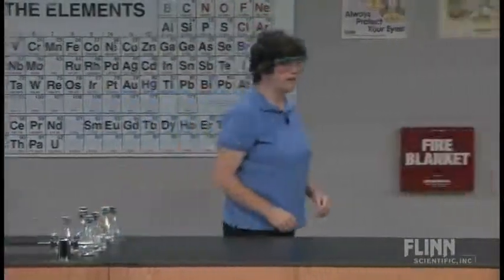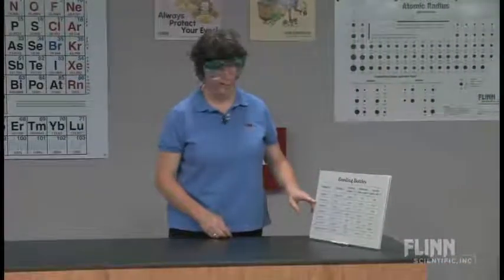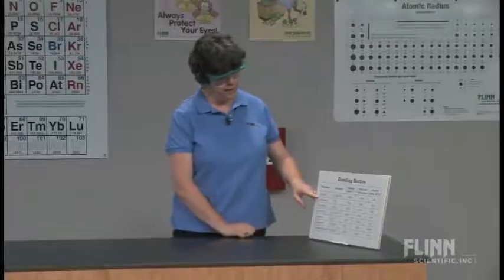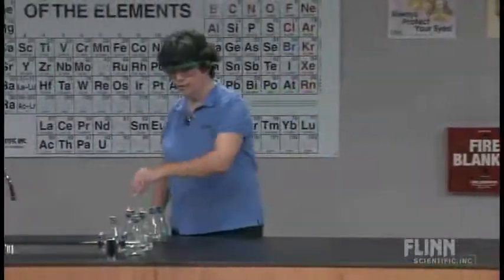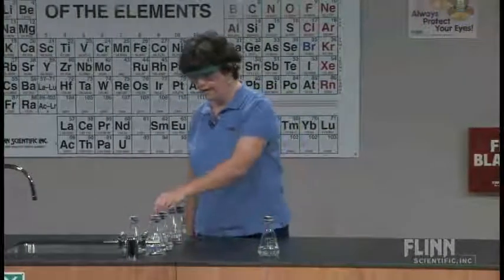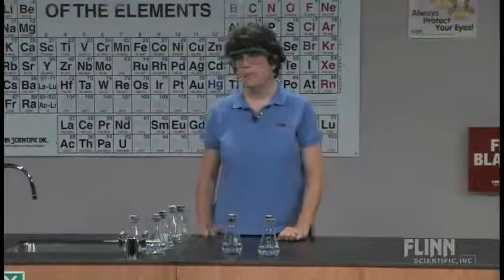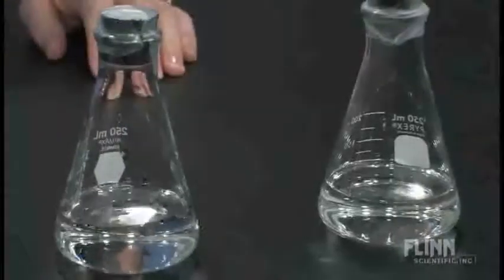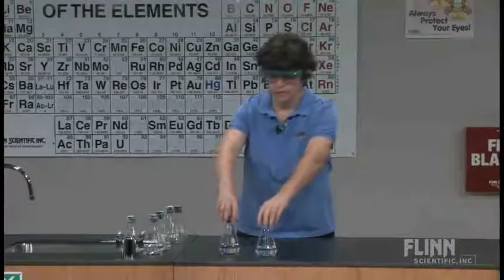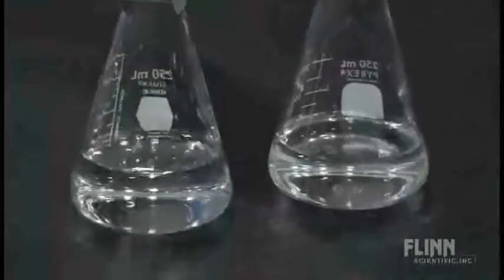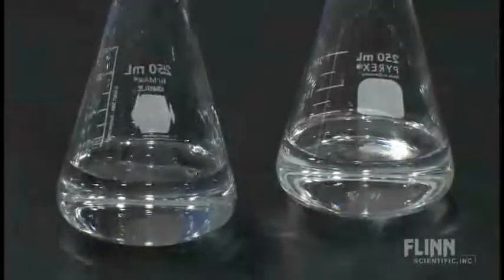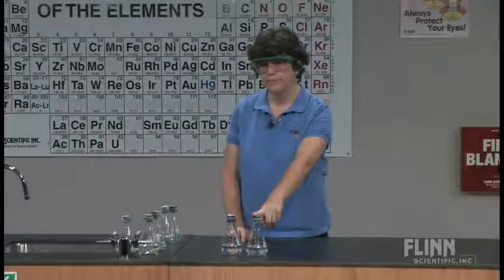I can also compare two compounds that have only dispersion forces but a different number of carbon atoms — for example, heptane, a hydrocarbon with seven carbons, and pentane, a hydrocarbon with five carbons. Five carbons on the left, seven carbons on the right. Dispersion forces only — the difference is the number of carbon atoms. If I pick them up and swirl them, the seven-carbon compound settles down much more quickly than the five-carbon. Why? There's no hydrogen bonding, no dipole. So we get to the point where more carbons means more dispersion forces.